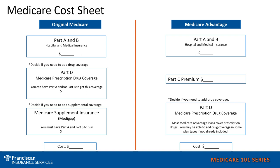If you decide to go with the Medicare Advantage plan, you would need to include your Part A and B premiums. Medicare Advantage plans do replace your Original Medicare Part A and B, but you still will need to pay your Part A and B premiums as applicable to you. Then you would want to add in your Part C premium. Most Part C plans do include prescription drug coverage, but should you be in a plan that does not include prescription drug coverage and you are eligible to add a prescription drug plan, then you would want to make sure you factor in the premium for your Medicare Part D prescription plan. Then you would have your total premium cost should you decide to go with the Medicare Advantage plan.